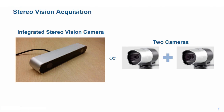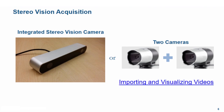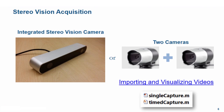An integrated StereoVision camera provides hardware triggering such that two images are taken at the exact same moment. With multiple camera setups, images must be taken one at a time from each camera. The lenses in an integrated camera do not move with respect to each other, which eliminates motion artifacts. A rig needs to be designed to ensure cameras do not shift, oscillate, or shake. MATLAB files such as Single Capture and Timed Capture have been provided to acquire images from a left and right camera.